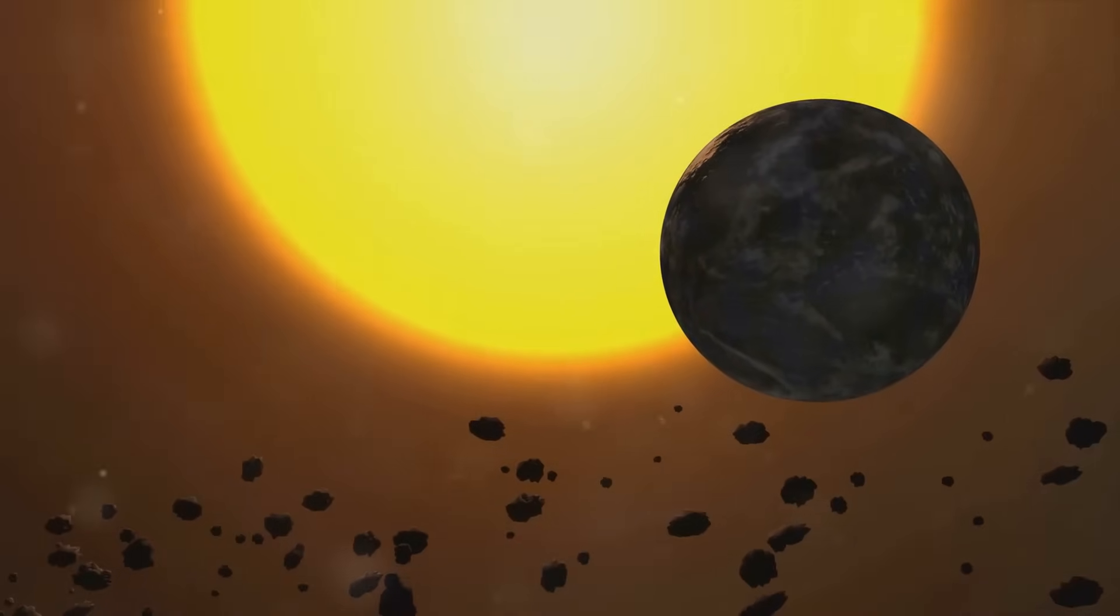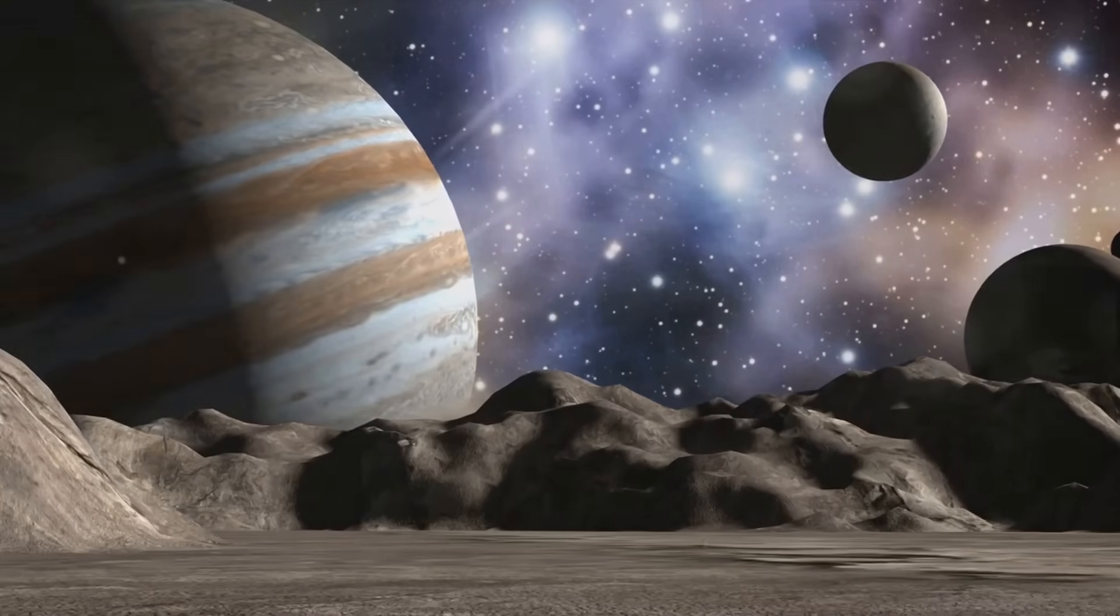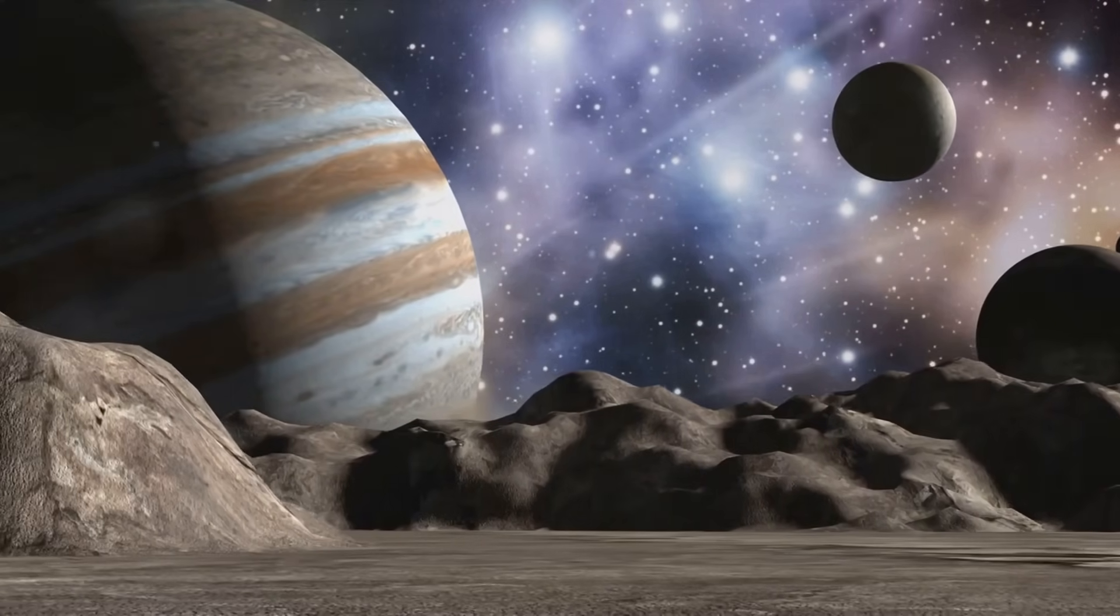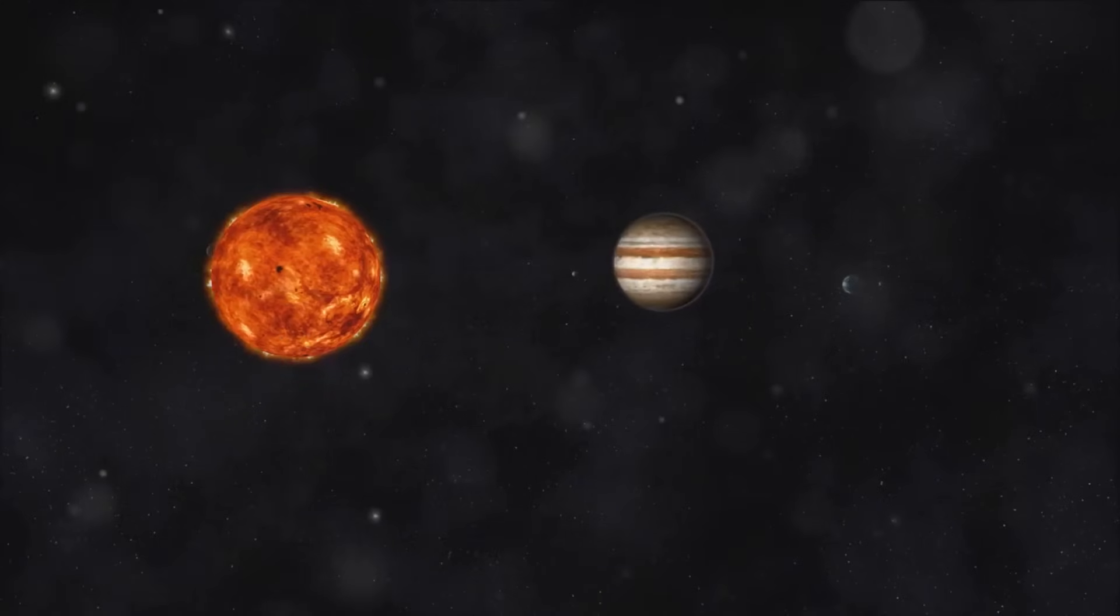Our solar system is a cosmic marvel, a testament to the diversity and beauty that exists in the universe. Each planet, each moon, each comet and asteroid, tells a story of cosmic evolution and celestial mechanics.